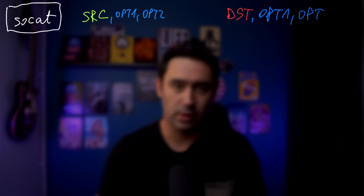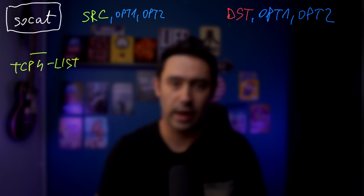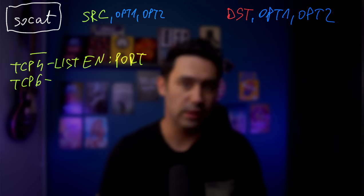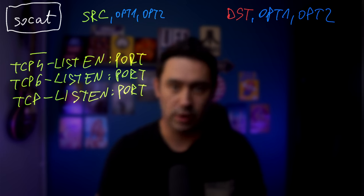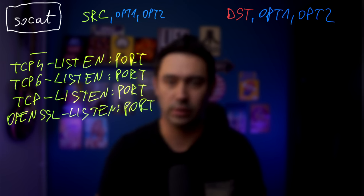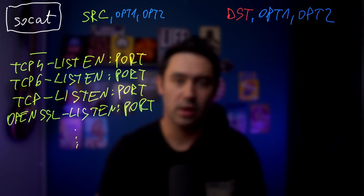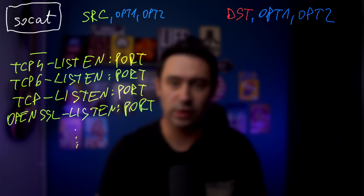SOCAT expects a source as the first parameter with some optional switches, and a destination with some optional switches as the second parameter. As the source, we can specify dash to indicate standard input, TCP-listen to accept TCP connections over IPv4 on a specific port, TCP6-listen for both IPv4 and IPv6, OpenSSL-listen for TLS connections, and many more like files, processes, UDP, named pipes, pseudo terminals, and Unix domain sockets.